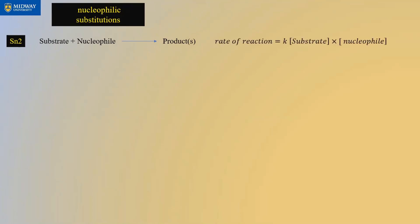Your reactant side of the equation contains both substrate and nucleophile, and the concentration of both are important. If you remember from chemical kinetics in Chem 175, the rate of the reaction in SN2 depends on both the concentration of the substrate and the nucleophile.